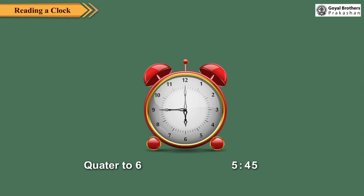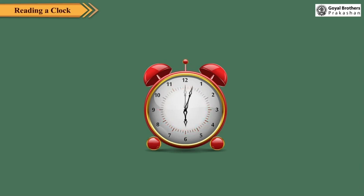So far, we have been reading time to 5 minutes accuracy. Let us now read the time to the exact minute. The interval between two numbers is divided into 5 equal parts, so there are 12 × 5, that is, 60 equal parts. When the minute hand moves from one number to the next, 5 minutes have passed. And when the minute hand moves from one smaller part to the next, one minute has passed.